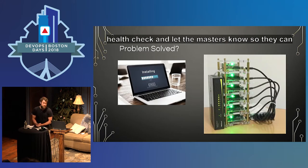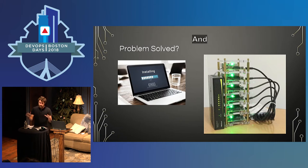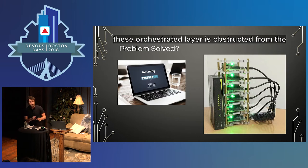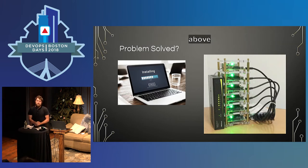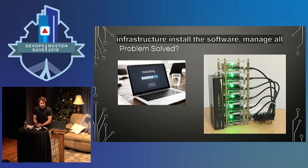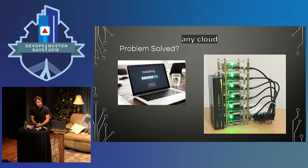Problem solved, maybe. The problem is this is a lot harder to actually do than it sounds. A lot of the reason is because the orchestration layer is abstracted from the infrastructure. The container engine sits above the operating system and infrastructure, which is on purpose — but that means it's on you to provision the infrastructure, install the software, manage all the updates, the scaling up and down, and all the networking. You can actually install Kubernetes on a cluster of Raspberry Pis — it works perfectly fine — but there are a lot of pieces involved.